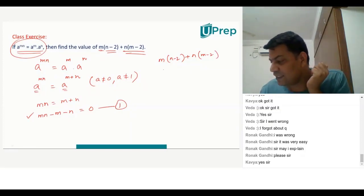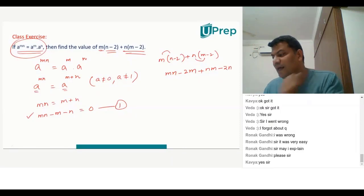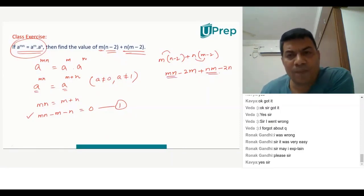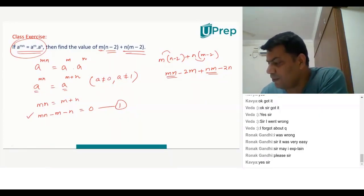I can write this as m into n. Multiply this. m into n is mn. m into minus 2 will be minus 2m. Plus n into m will be nm. And n into minus 2 is minus 2n. Right? mn or nm, it's the same thing. Therefore, it can be written as 2mn minus 2m minus 2n.